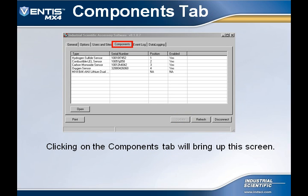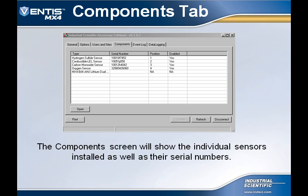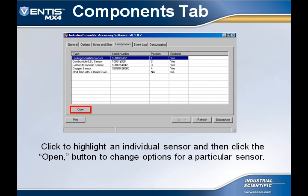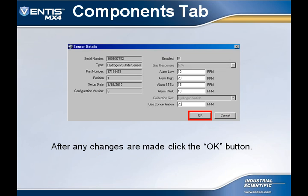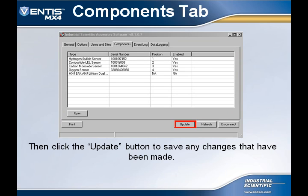Clicking on the Components tab will bring the user to this screen. The Components tab shows the individual sensors installed in the MX-4 and their corresponding serial numbers. Highlight a sensor by clicking on it, then select the Open button to view the individual sensor information. From this screen, the user can change the High, Low, STEL, and TWA alarms for that particular gas. The calibration gas can also be changed. Select the OK button to exit this screen, and if any changes were made, be sure to select the Update button to save those changes.